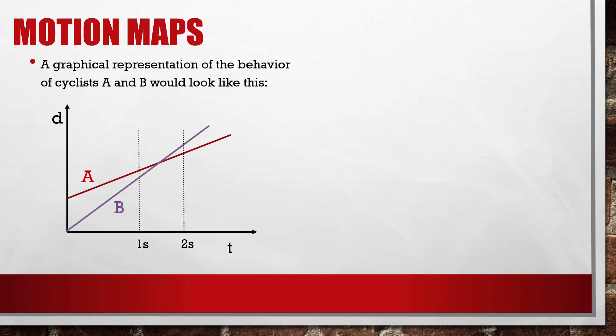We can see that each cyclist is traveling at a constant speed, although B is traveling faster. And we can see that between t equals 1 second and t equals 2 seconds, cyclist B passes cyclist A.